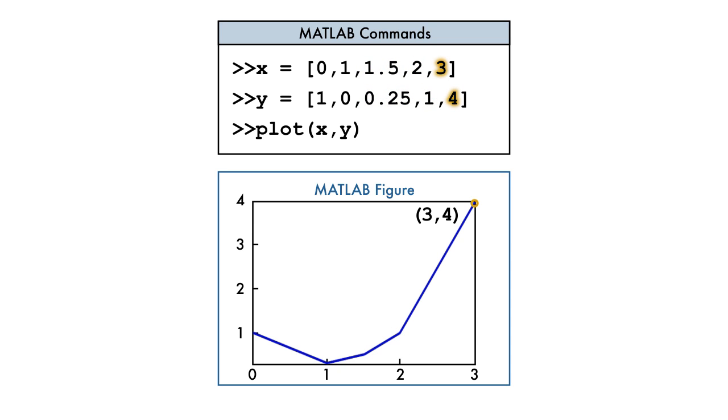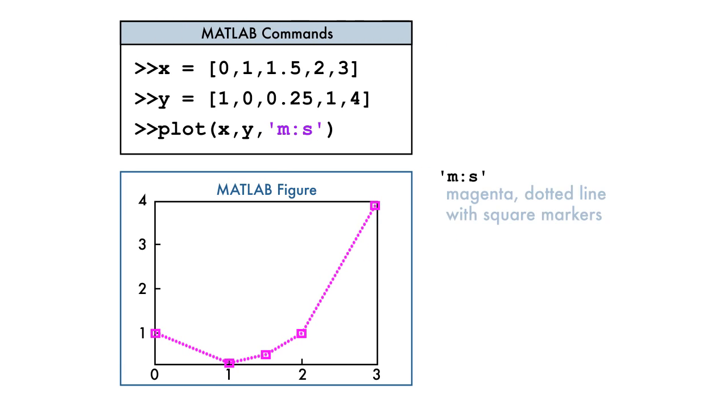We can add markers to the points by using a third input to the plot function. The third input contains characters surrounded by single quotation marks that specify the format of the graph. In this particular example, the line will be a magenta dotted line with square markers.